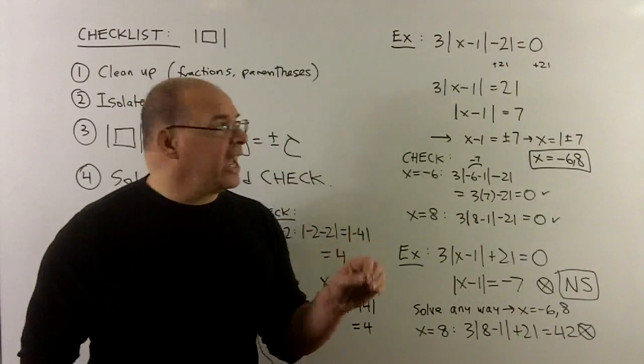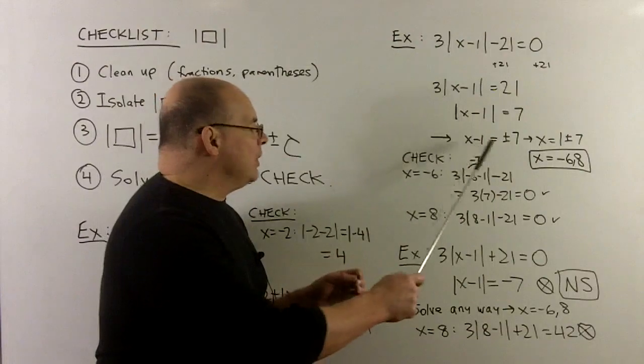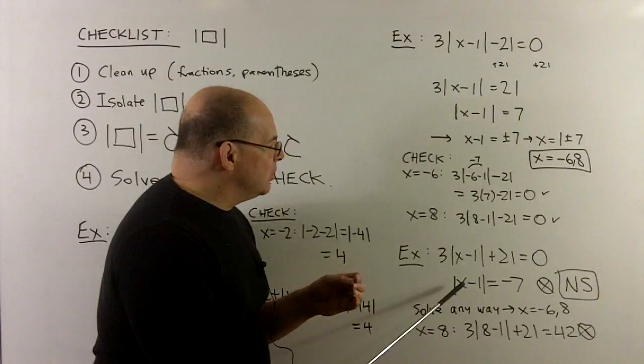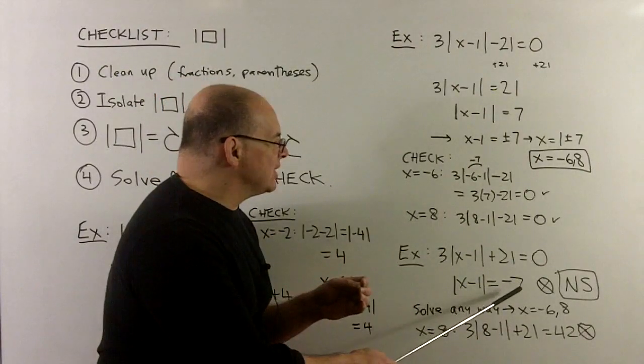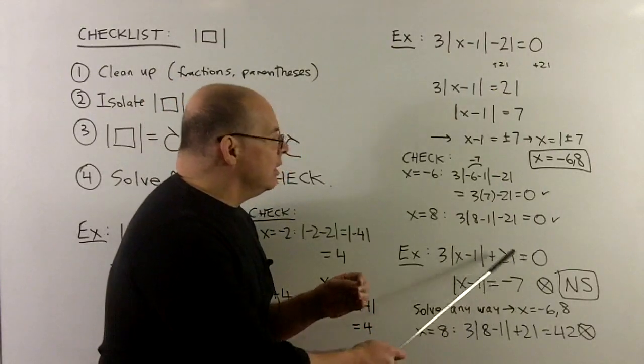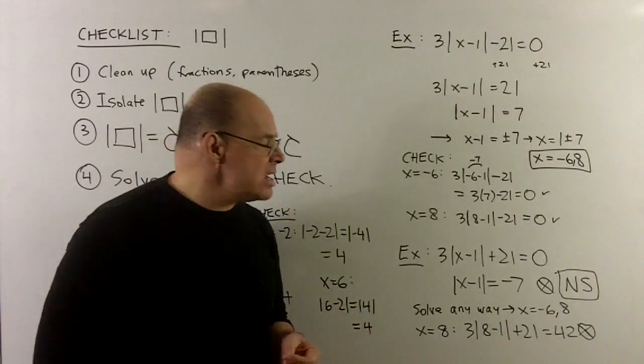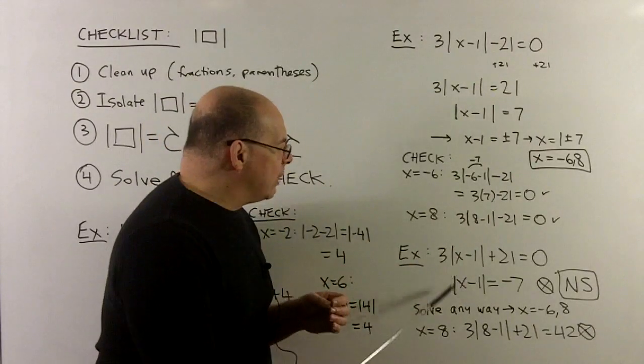Now, let's change the minus 21 to a plus 21. When we do the isolation, that's going to get us to x minus 1 equal to minus 7. Note, minus 7, we can't have distance minus 7. So I can never make this happen, no matter what x you try to put in here.